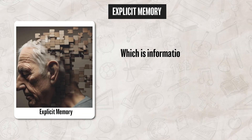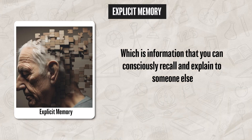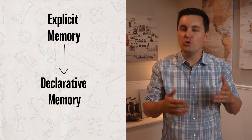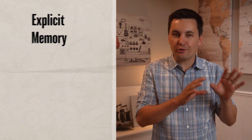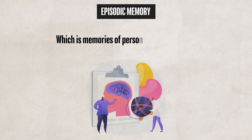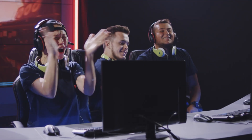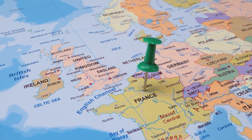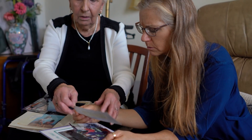The first type of memory to be familiar with is explicit memory, which is information that you can consciously recall and explain to someone else. Sometimes explicit memory is called declarative memory, since you can declare it out loud. There are two different types: episodic memory, which is memories of personal experiences or specific events — for instance, your memory of your first victory royale in Fortnite — and semantic memory, which is facts, concepts, and general knowledge, such as remembering that the capital of France is Paris.